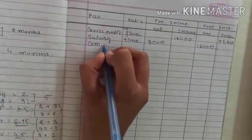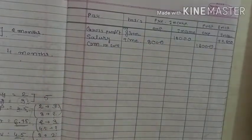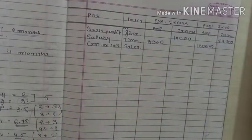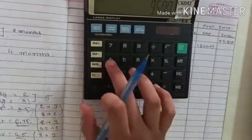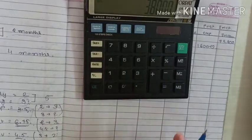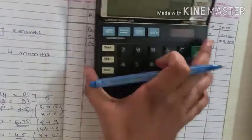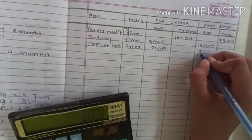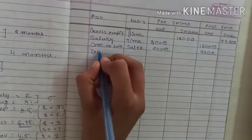Commission on sales is distributed on the basis of the sales ratio 4:15. Total commission is 9,500. So: 9,500 × 4/19 = 2,000 for pre-incorporation and 9,500 × 15/19 = 7,500 for post-incorporation.